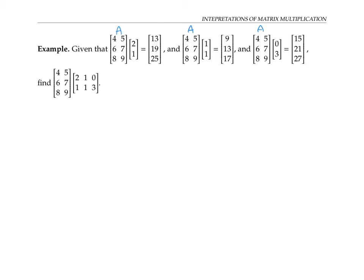So now, if we want to multiply the same matrix A times the matrix we get by sticking those 2×1 column vectors all together into a 2×3 matrix, that's just the same as doing A times the first column, A times the second column, and A times the third column — and then concatenating all those column answers together.